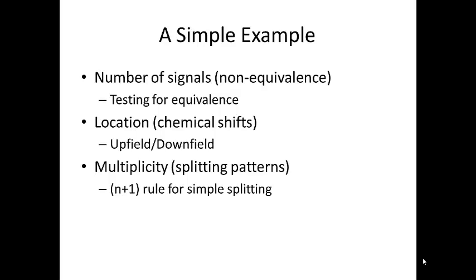To follow up on our lecture on NMR, in this example we're going to talk about why we see a specific number of signals for an NMR spectrum for a particular compound. We'll look at the test for proton equivalence, why signals show up where they do — the chemical shift — and discuss upfield and downfield. Then we'll look at multiplicity, which deals with splitting patterns and a simple explanation of the N plus one rule.